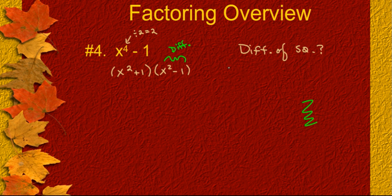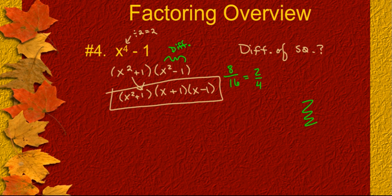So, that means if I stop here, it would be like simplifying an 8 over 16 and taking a 4 out and getting a 2 over 4. You factored it, but you stopped too soon. So, in order to finish this one, we have to look at just this difference of square. The square root of x squared is going to be an x plus 1, and then I'm going to have an x minus 1. And then my original parenthesis is still there. My ultimate answer in factored form would be x squared plus 1 times the quantity of x plus 1 and x minus 1. And that's it for factoring overview.